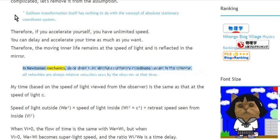In Newtonian mechanics, since there is no absolute stationary coordinate system in the universe, all velocities are always relative velocities seen by the observer at that time. My time, based on the speed of light viewed from the observer, is the same as that at the speed of light c. Speed of light outside, we squared, equals speed of light inside.